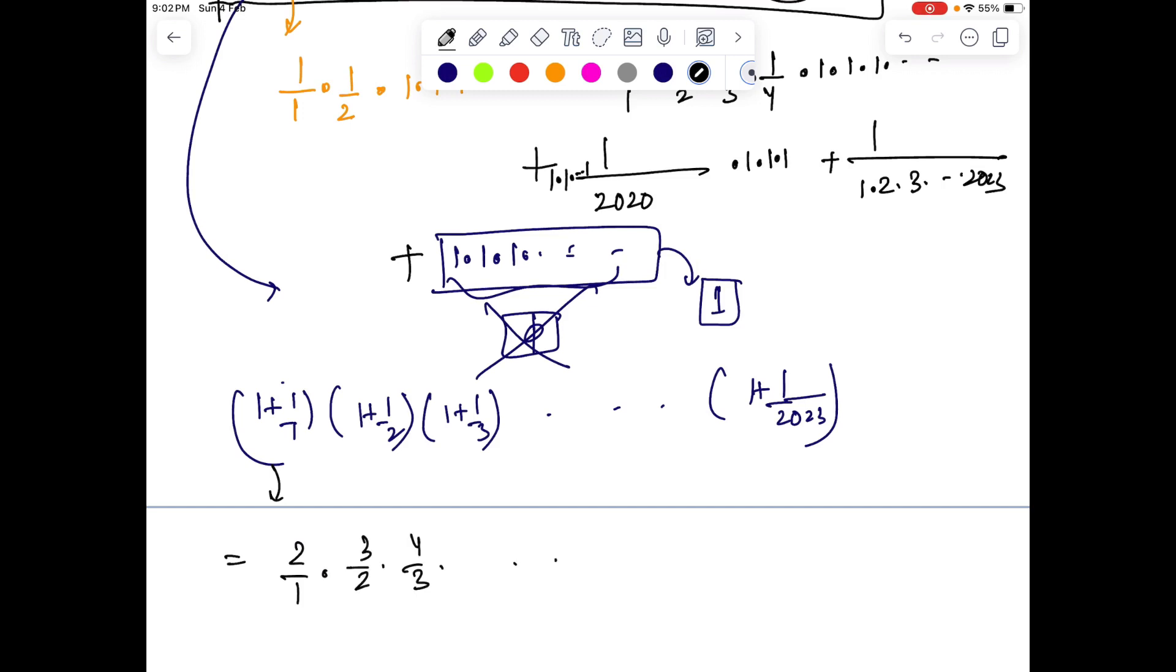Because it's just a telescoping series. So we have 2/1 · 3/2 · 4/3 till 2024/2023, and you can easily see the cancellation will happen—2 gets cancelled, 3 gets cancelled. So we'll be left with just 2024. But remember we need to subtract 1 to account for the empty subset, so the answer is 2024 minus 1, which is 2023.